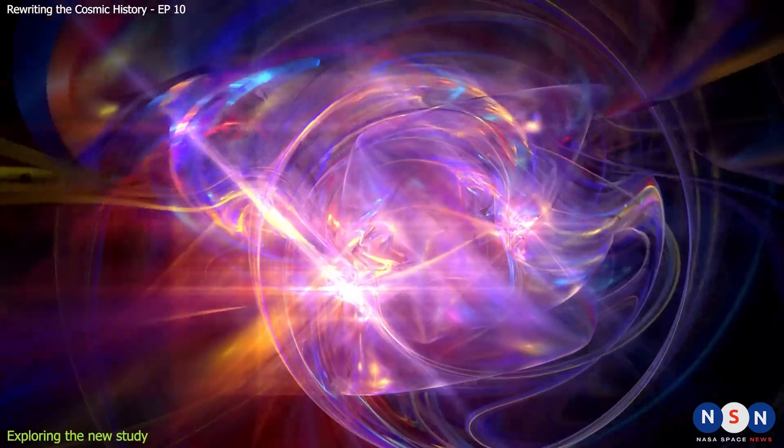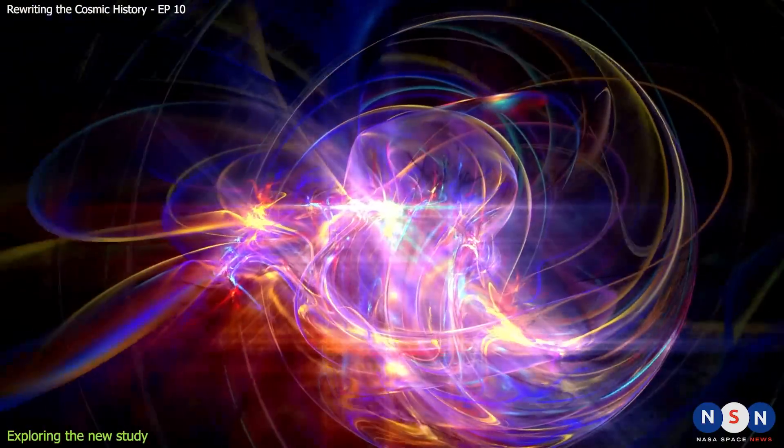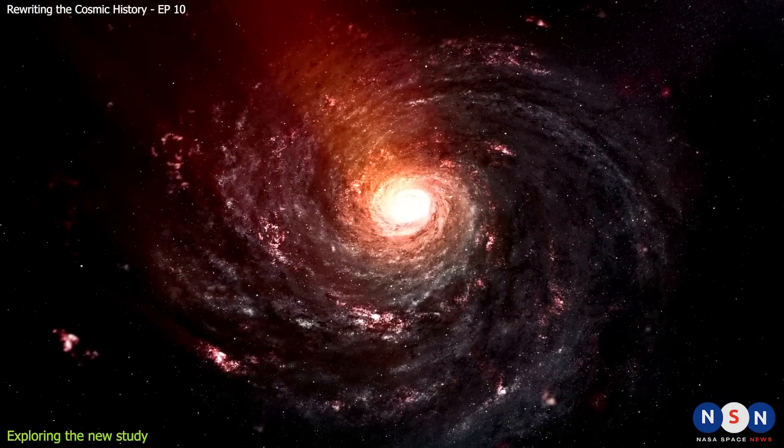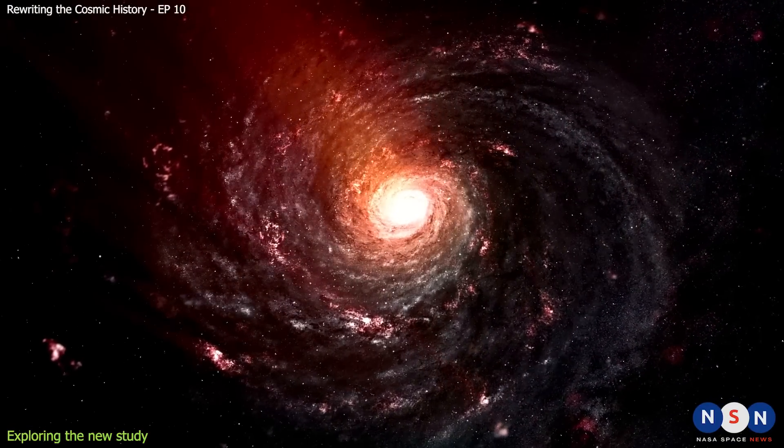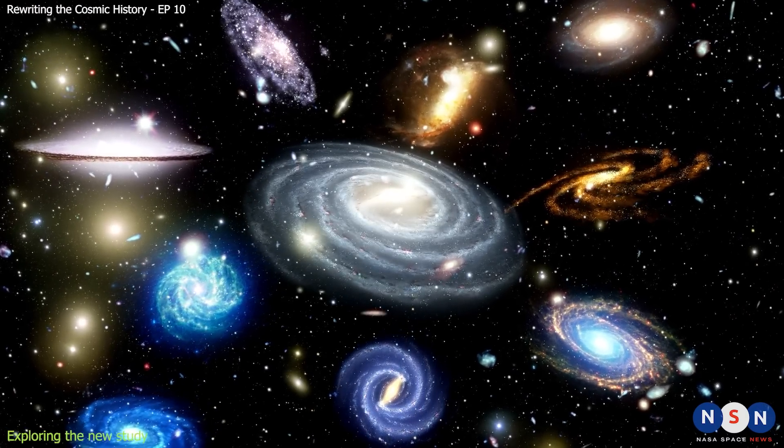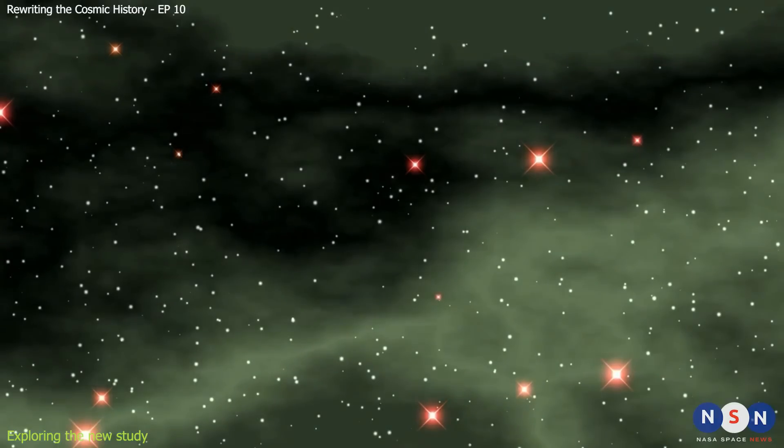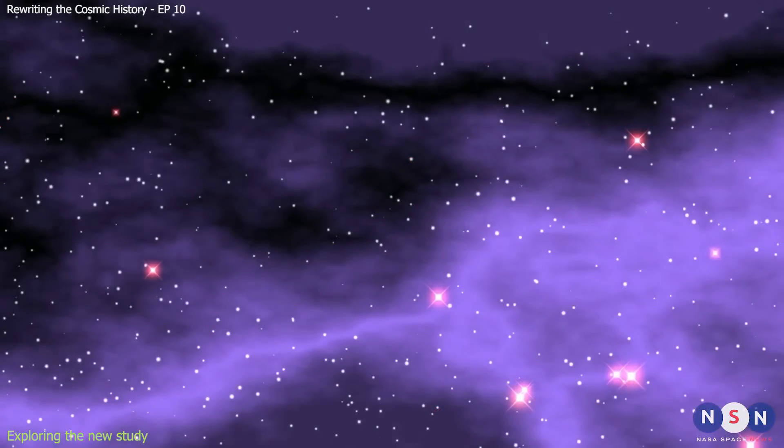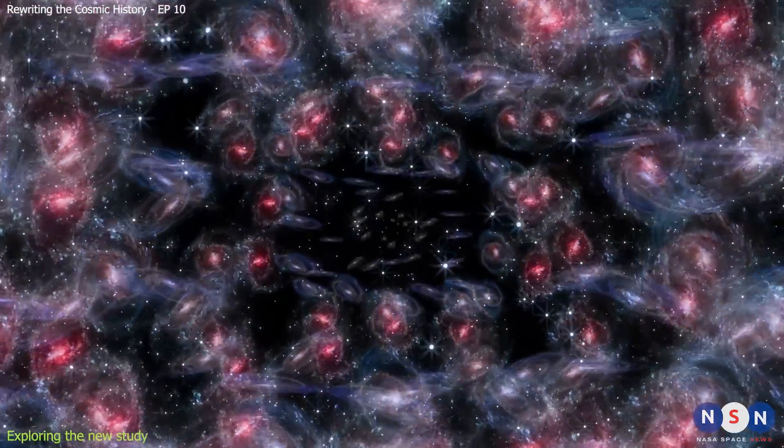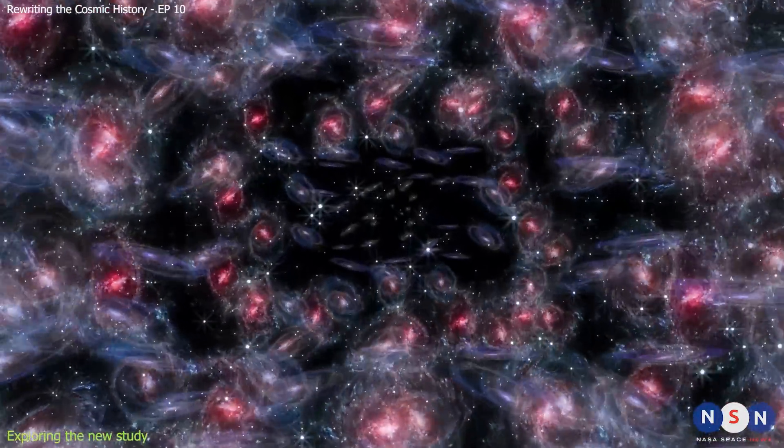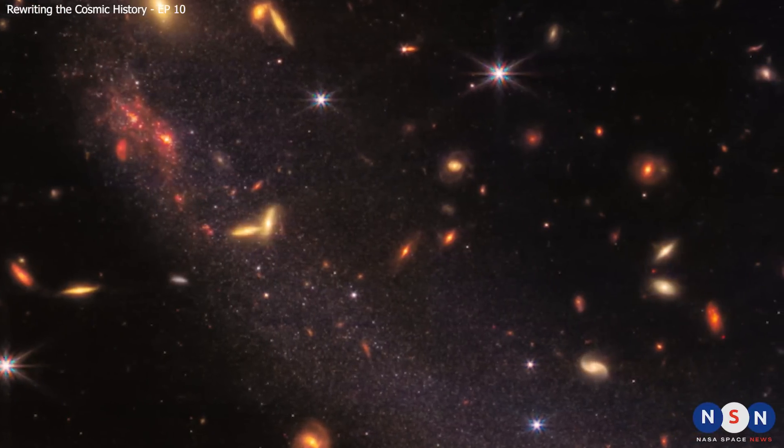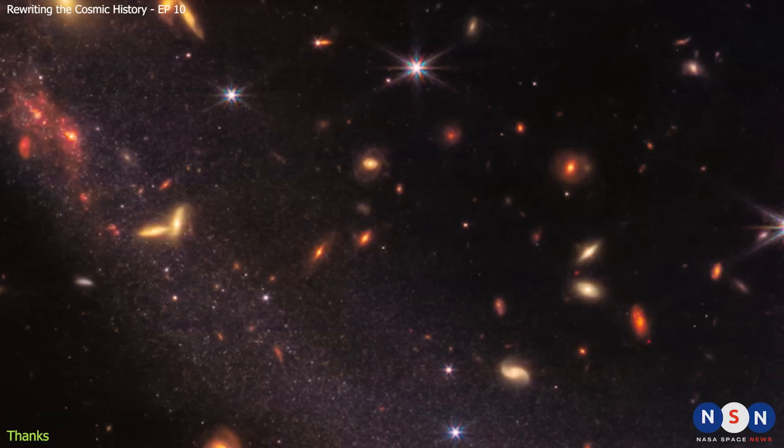Moreover, at high density there is more gas available to fuel the starburst and more chances for collisions or instabilities to trigger it. The new model shows that under these conditions, starbursts can produce early massive galaxies with high efficiency and in short time scales. The model also explains why these galaxies are clustered together in proto-clusters, because they form from regions that are over-dense with dark matter and gas. The model also predicts that these galaxies should have distinctive features such as strong ultraviolet emission and faint infrared emission. These features are consistent with what James Webb observed.